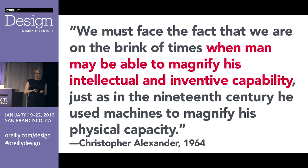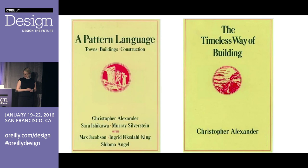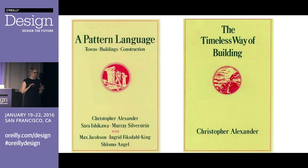Alexander was interested in artificial intelligence and refers to it in 1964's Notes on the Synthesis of Form. He looked at people like Herbert Simon, J.C.R. Licklider, and Marvin Minsky, exploring ways to create an intelligent system for architecture that would be stable and could face change. He said: 'We must face the fact that we are on the brink of times when man may be able to magnify his intellectual and inventive capability, just as in the 19th century he used machines to magnify his physical capacity.'